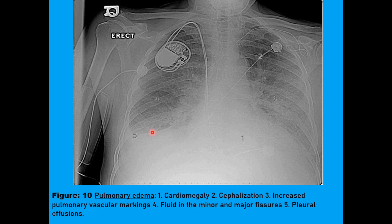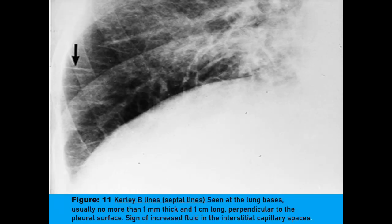This is a patient with cardiogenic pulmonary edema. The clue towards cardiogenic pulmonary edema is that the cardiac shadow is enlarged — the cardiothoracic ratio is greater than 50%. There is prominence of the upper lobe vessels, called upper lobe diversion, increased pulmonary vascular markings, fluid in the minor and major fissures, and bilateral pleural effusions. Curly B lines or septal lines can be seen at the lung bases — they are usually no more than 1 mm thick and 1 cm long, perpendicular to the pleural surfaces, and are signs of increased fluid in the interstitial capillary spaces.